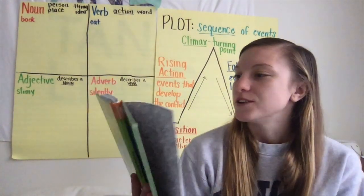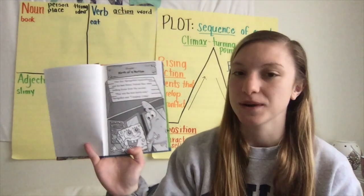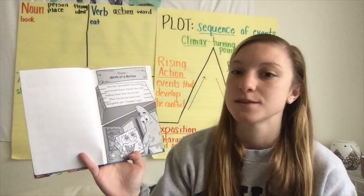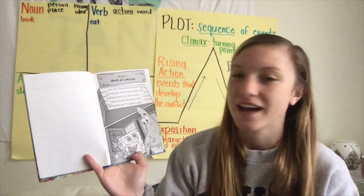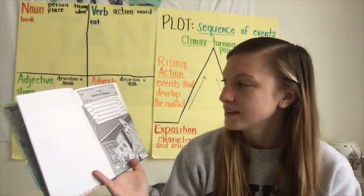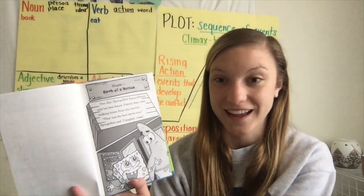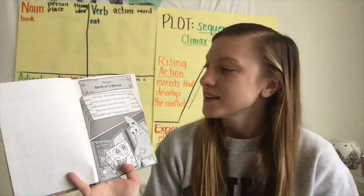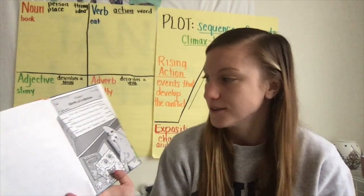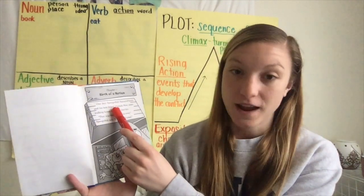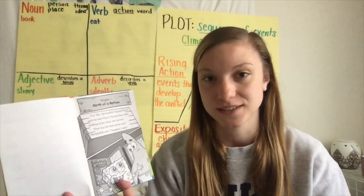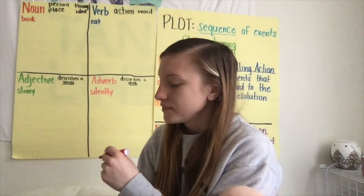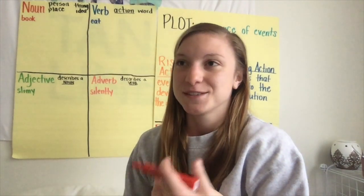Chapter one: Birth of a Notion. One day SpongeBob SquarePants and his best friend Patrick Starr were walking home from the movies. 'That was the best movie ever,' SpongeBob said. 'I laughed. I cried.' So on that page there are lots of parts of speech I identified right away. First I'll start with the nouns: SpongeBob SquarePants — he himself is a noun — and his best friend Patrick Starr. A friend is a person, so those are two nouns I'm going to add to my chart.